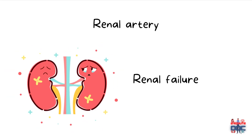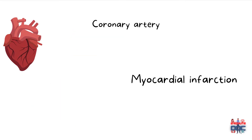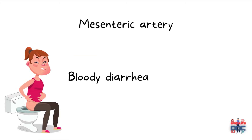The clinical features of Polyarteritis nodosa can include renal failure and hematuria because of involvement of the renal artery. There can also be involvement of the coronary artery, which can cause myocardial infarction. And because of involvement of the mesenteric artery, there can be bowel ischemia leading to bowel necrosis, and these patients can have bloody diarrhea.